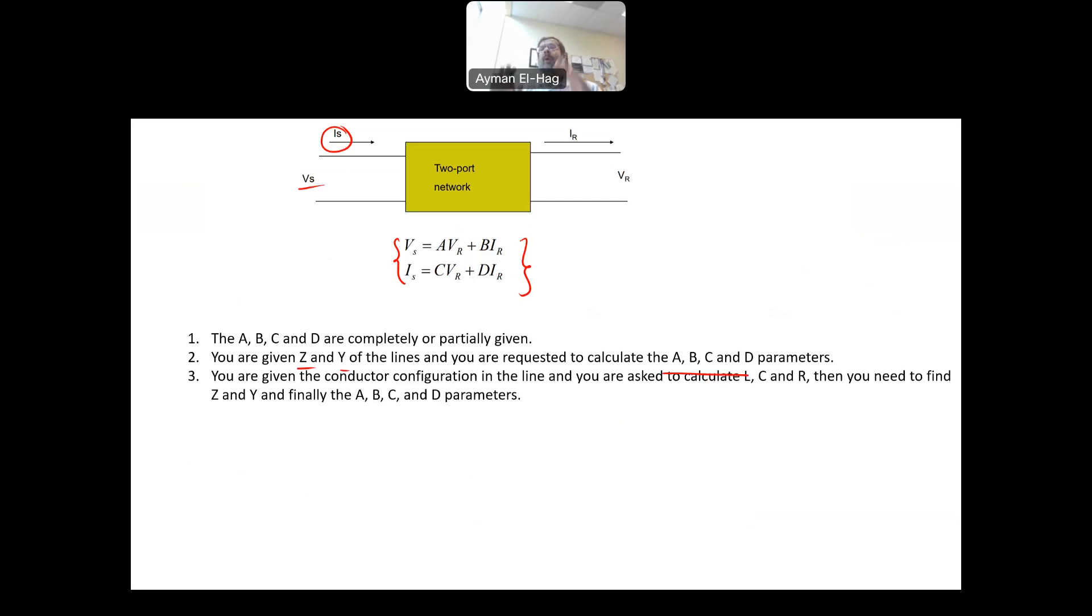Finally, you are given only the configuration of the tower and the overhead lines. So for example, you're given a three phase and each phase, they have certain distance between them and certain radius or what we call the geometric mean radius. And then you are asked to calculate L inductance, C capacitance and R, and then you will calculate from that the Z and Y. And finally, you calculate the ABCD parameters and then you come and use this formula. So these are the three different categories we will have in this question. It will be the first category as we will see.